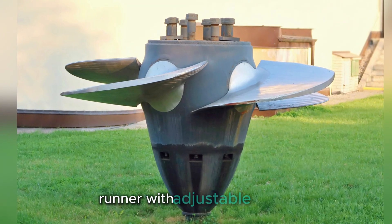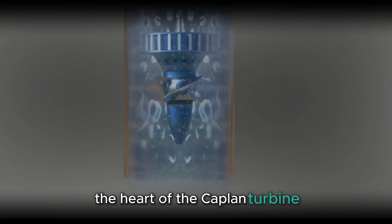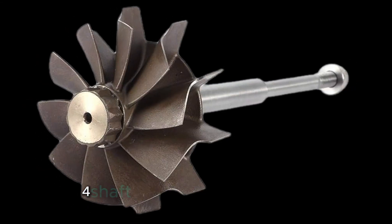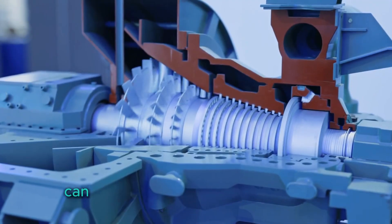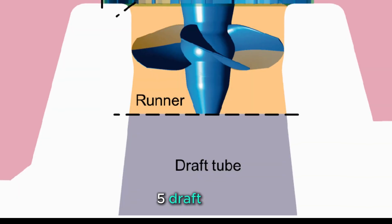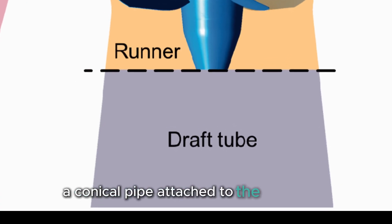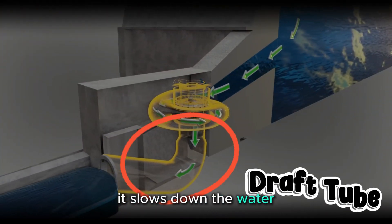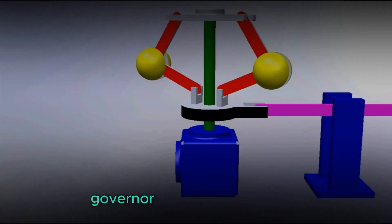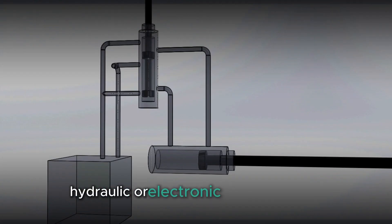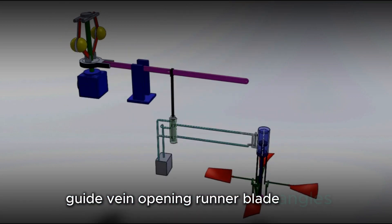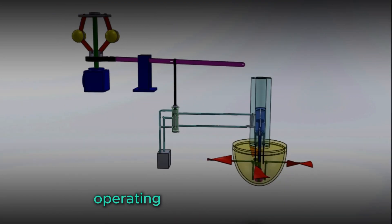Third, runner with adjustable blades — the heart of the Kaplan Turbine. The runner resembles a ship propeller and consists of adjustable blades. Fourth, shaft: connects the runner to the generator, and can be vertical or horizontal depending on plant design. Fifth, draft tube: a conical pipe attached to the exit of the runner that slows down the water, converts kinetic energy into pressure energy, and reduces energy losses. Sixth, governor system: an automated hydraulic or electronic control system that adjusts the guide vane opening and runner blade angles. This system keeps the turbine operating at optimal efficiency.